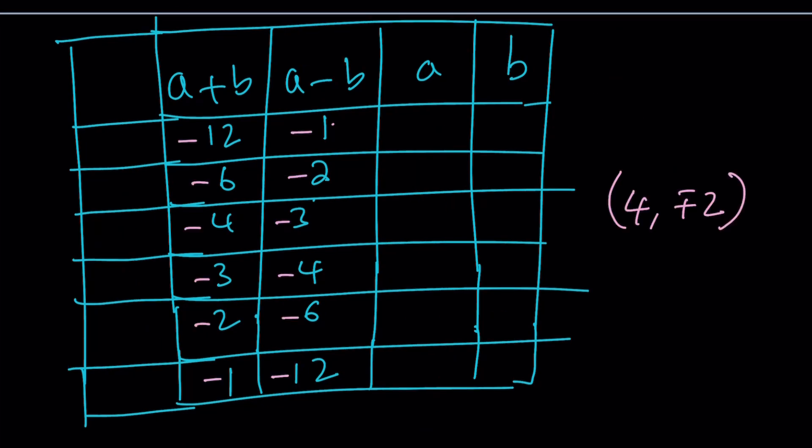So here is the negative values. And let's go ahead and take a look. When A plus B and A minus B add up to an odd number, we're not going to have a solution because negative 12 and negative 1 will give us a negative 13. This is a good case. This is a bad case. This is a bad case. This is a good case. And this is a bad case. Pretty much the same thing.